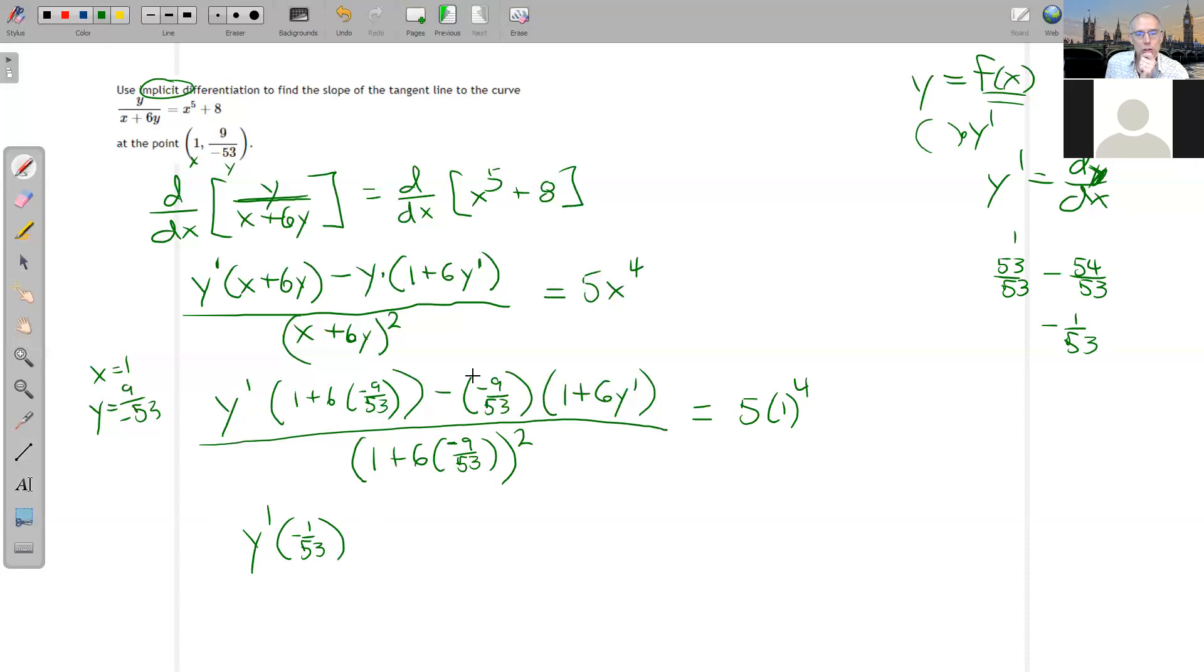And then here we have minus a negative, right? So that's going to be plus, and then we're going to distribute that. So that's going to give me 9 over 53 plus 54 over 53 Y prime, all over, so let's see, down here I just did that same calculation. And now I'm squaring it. So that's going to give me 1 over 53 squared in the bottom.